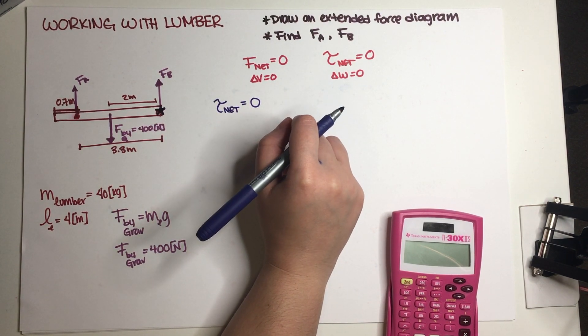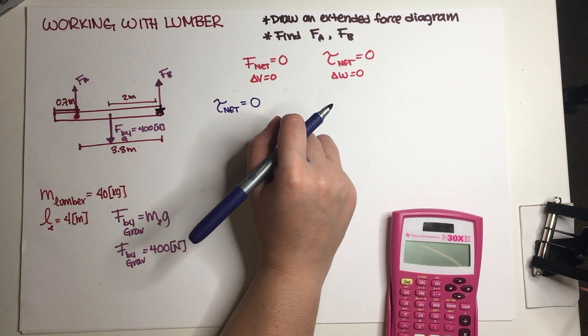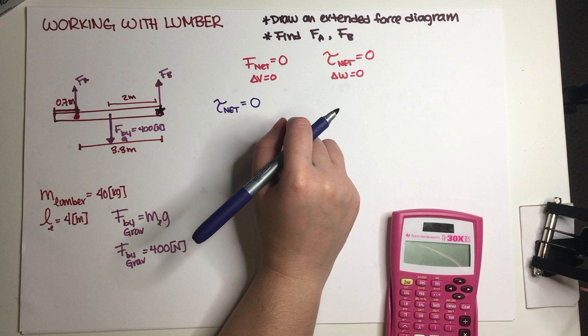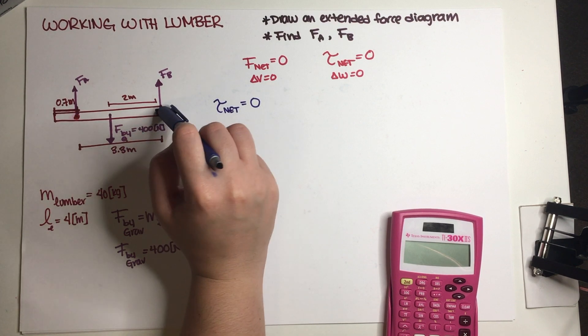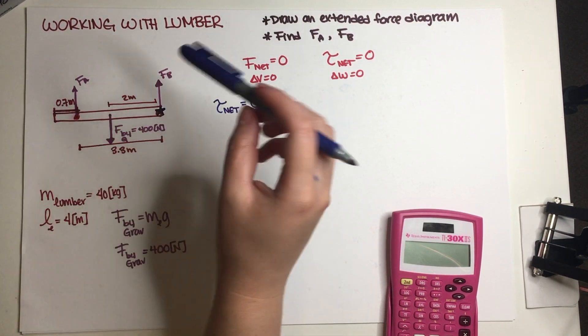Now we need to expand on that. So how many forces do we have in total? Three. How many of those forces are generating a torque? Well that would be two, because force by lumberjack B is not generating a torque because he's applying the force exactly at the pivot point. So r is equal to zero.